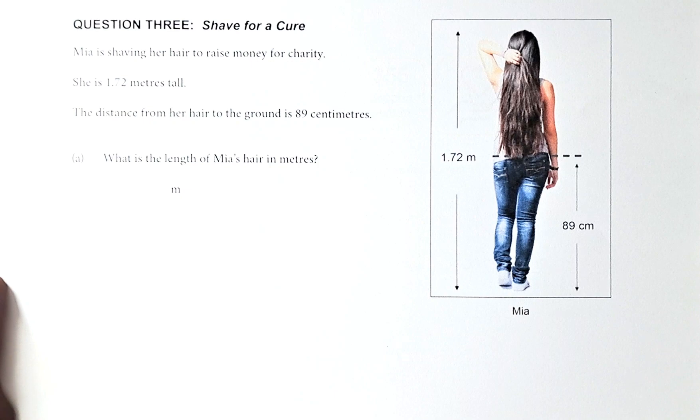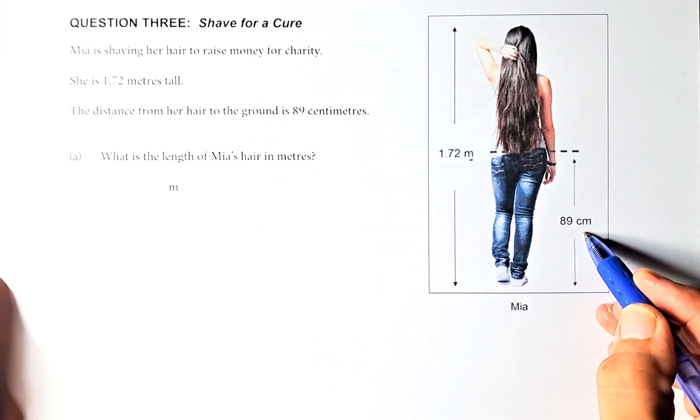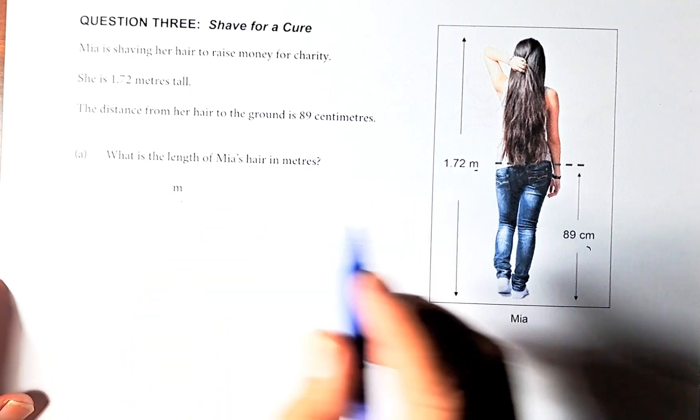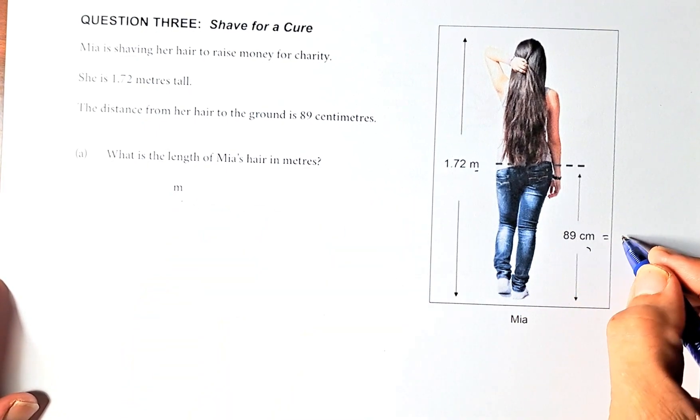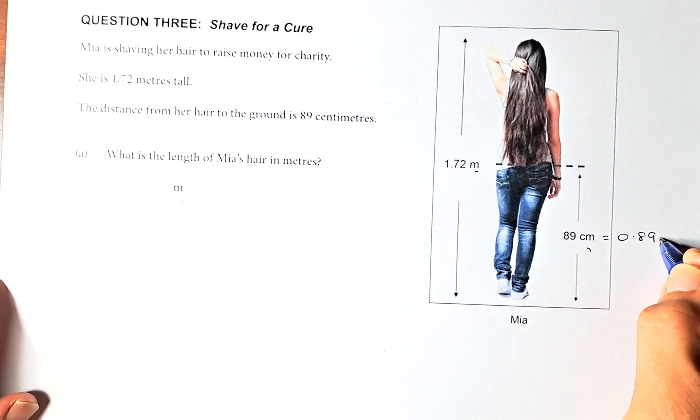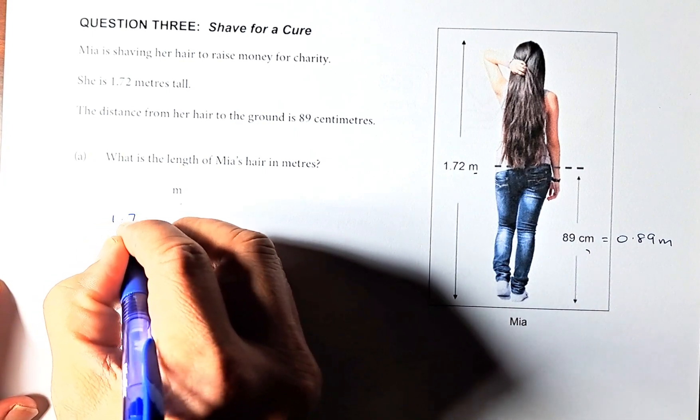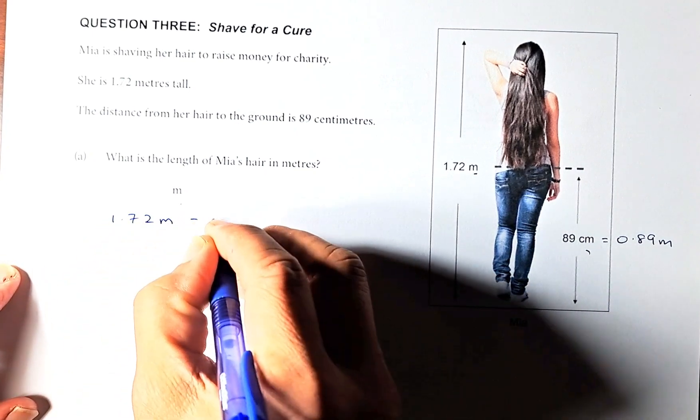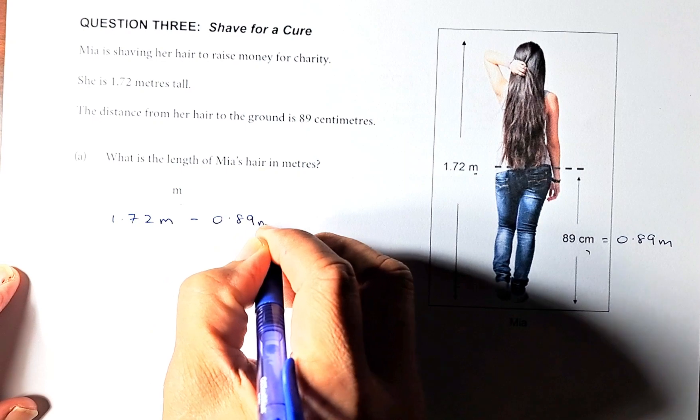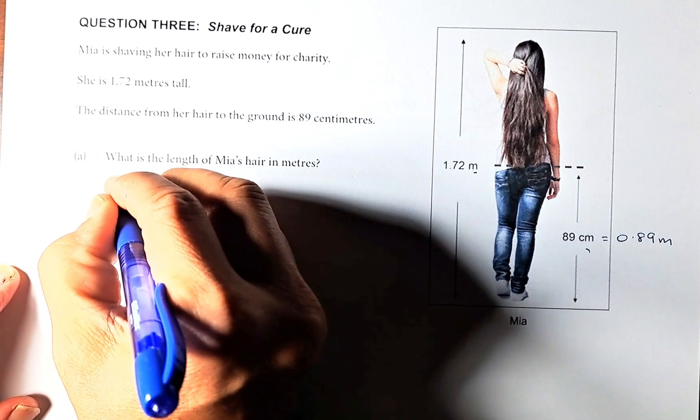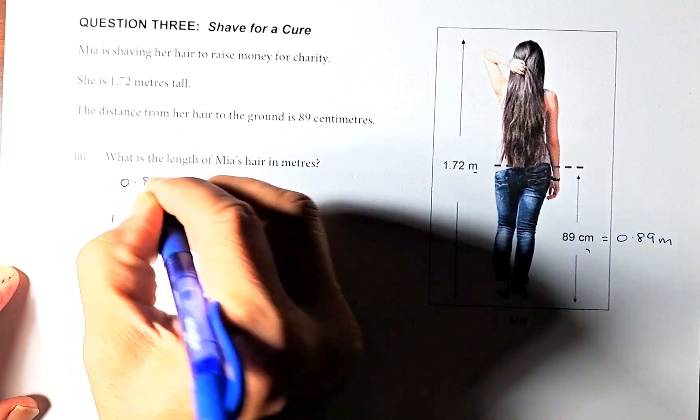So the question is very simple. What is the length of Maya's hair in meters? Remember, this is meters, this is centimeters. So we are going to convert everything into meters because the question asks in meters. So 89cm is the same as 0.89m. To find the hair length is going to be 1.72 meters minus 0.89 meters. And if you put in a calculator, the answer is going to be 0.83 meters.